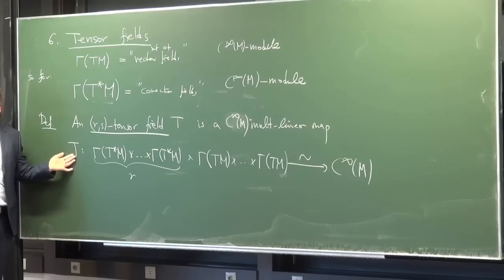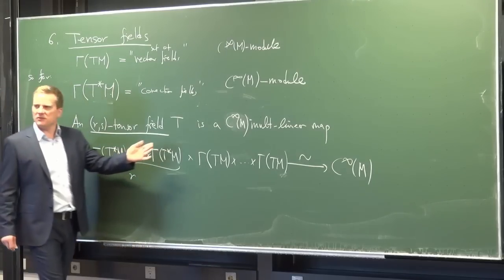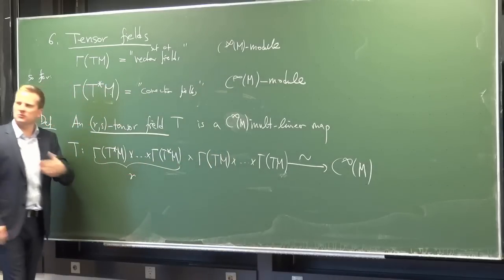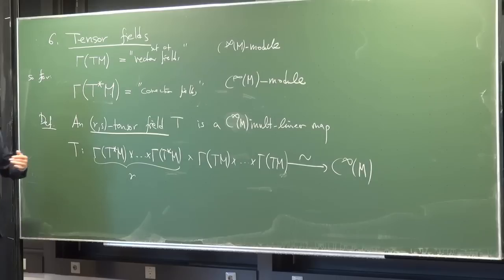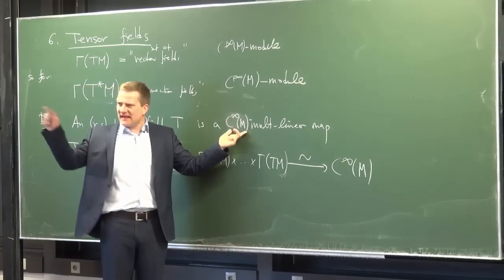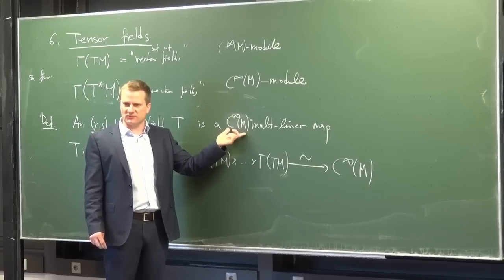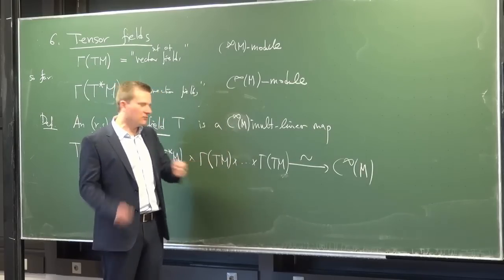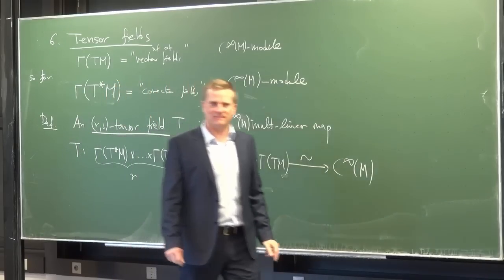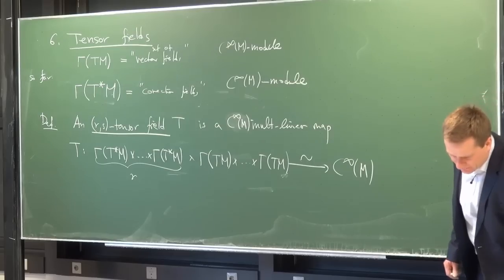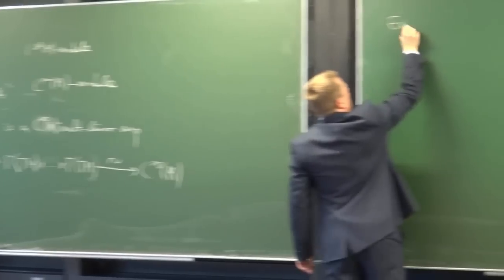This is an incredibly practical requirement. In the future we'll define the Riemann tensor and the torsion tensor, and once written down you must check whether the map is multilinear in each entry — specifically C∞(M)-linear, not just ℝ-linear. Many objects are ℝ-multilinear when you feed vector fields into them, but they are not C∞(M)-linear. Only the second type qualifies as a tensor field.